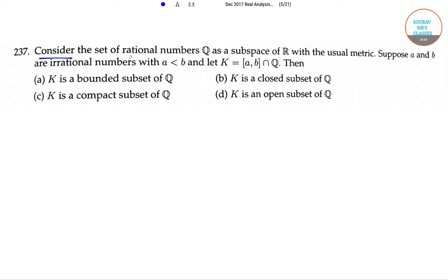Consider the set of all rational numbers Q as a subspace of R with the usual metric. Suppose a and b are irrational numbers with a less than b, and let K equal [a, b] intersection Q.